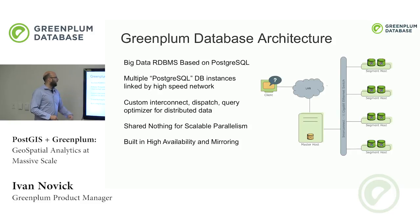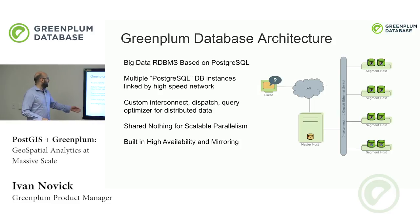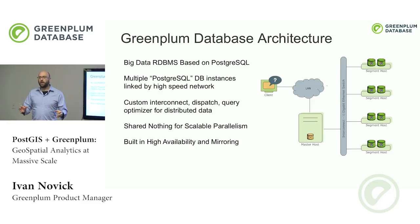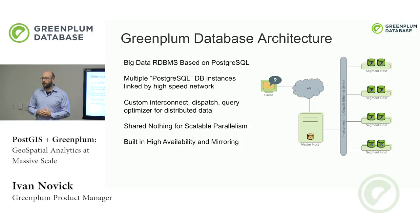Greenplum has a custom interconnect to ship data between nodes within a query plan, an MPP-aware optimizer that minimizes cost including data movement across the cluster, a dispatcher to push queries to all nodes, and a global transaction manager to keep consistency across the entire cluster. By taking this big data Greenplum architecture and applying PostGIS on top of it, we can use the same valuable functions created for Postgres, but at scale.